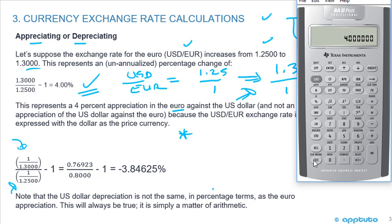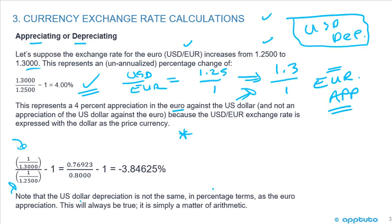So we're going to use the reciprocal of the new price divided by the reciprocal of the old price. So bring up the calculator again. 1 divided by 1.3, that's going to give me a numerator of 0.76923. And for the denominator, 1 divided by 1.25, that's going to give me a denominator of 0.8.